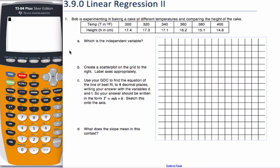Alright, so Bob is experimenting in baking a cake. I love cake. Yum, yum, yum. At different temperatures and comparing the height of the cake. So one of them is independent variable. From science class you've probably heard that before, and from math class. Which variable is affecting which other variable? Which one is the boss, so to speak?